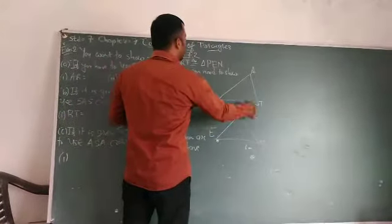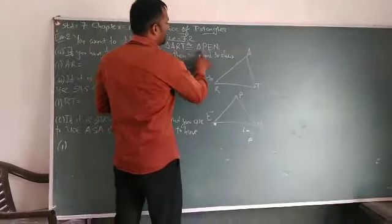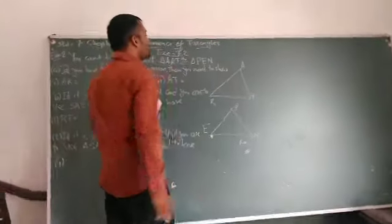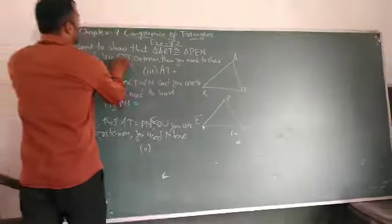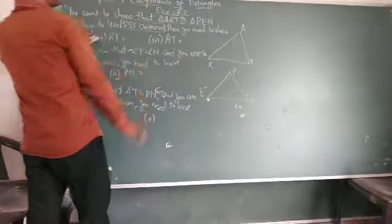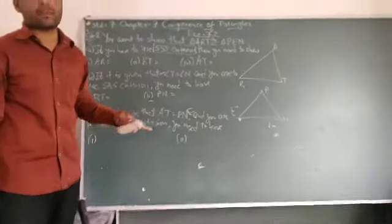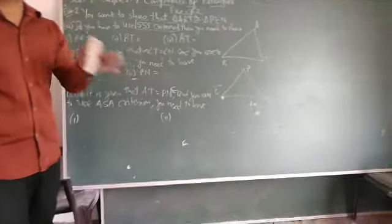These are A, R, T is congruent to triangle P, E, N. So first, if you have to use SSS criterion, so three sides are equal. It is compulsory to have the three sides are equal.